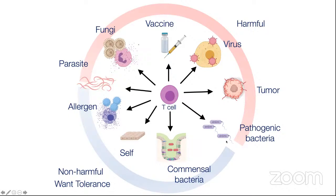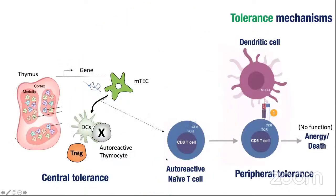We're very interested in how this balance is established. It's been known for decades that in the thymus, you have central tolerance, where you remove autoreactive thymocytes against the majority of self-antigens. That's done through the expression of antigens in the context of medullary thymic epithelial cells, which present antigens to autoreactive thymocytes. You either get death of those cells, or you might get the formation of Tregs for CD4s. Of course, this process is imperfect.